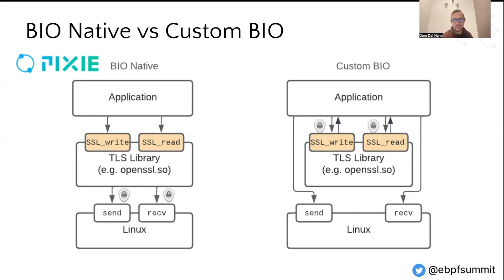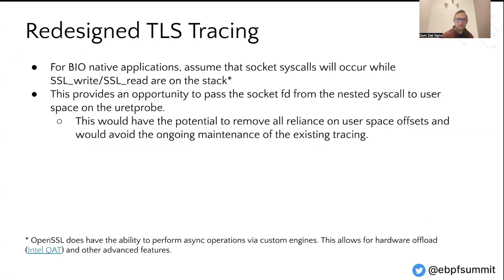In the BIO native case, all of the SSL write and SSL read calls call send and receive. We felt there was an opportunity to pass the socket file descriptor back from the syscall layer to our user space tracing layer. We wanted to assume that socket syscalls occur while these functions are on the stack, providing an opportunity to pass a socket FD from the syscall to the user space tracing on the U return probe. By using this stable interface, we would be able to remove our reliance on user space offsets and avoid ongoing maintenance of supporting new offsets as they changed for new versions.